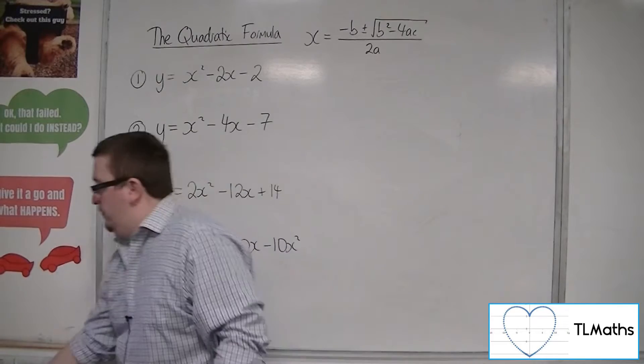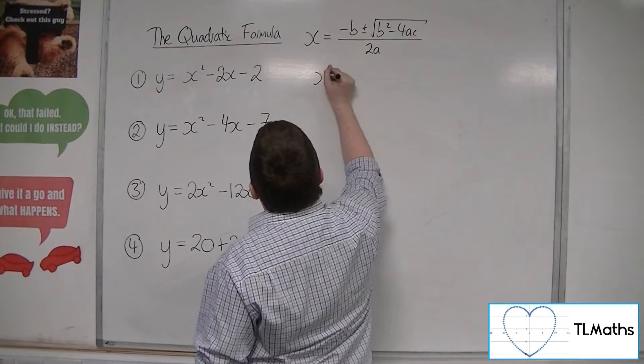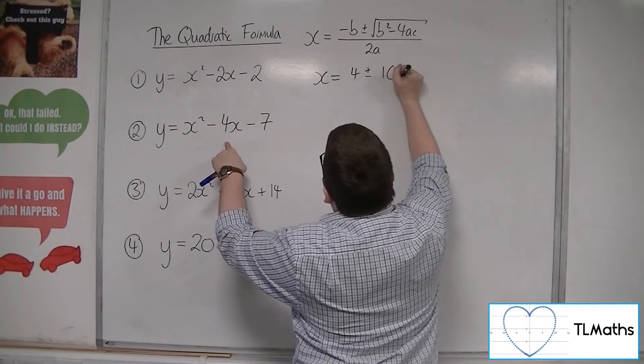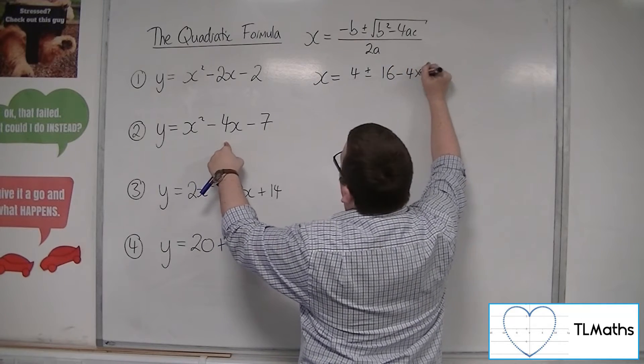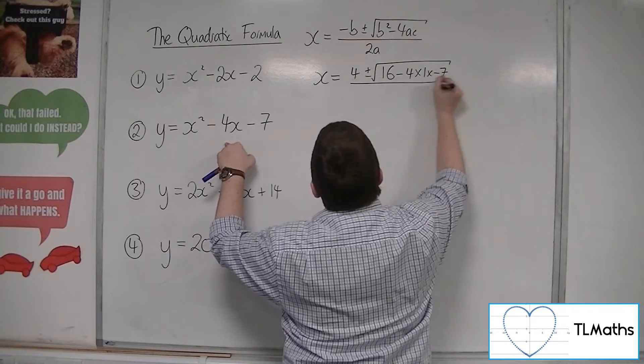Let's have a look at number 2. y is equal to x squared minus 4x minus 7. So x is equal to minus b, so 4, plus or minus b squared, 16, take away 4 times 1 times minus 7. Square rooted all over 2a, so 2.